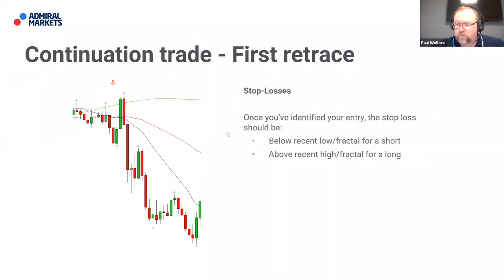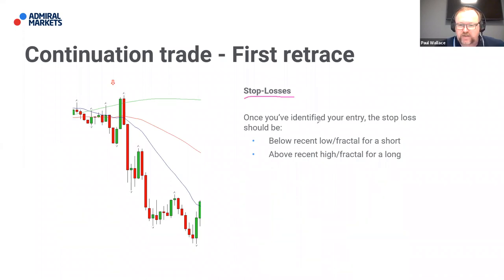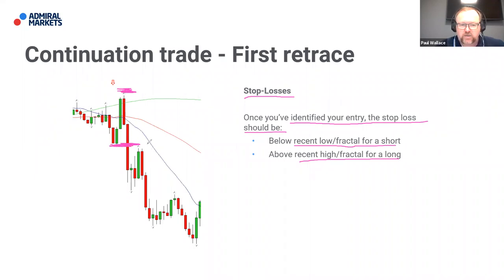Once we've identified our entry, it's important to know where our exit is should the trade not work out. As good traders we want to know where we're getting in, where we're getting out when we're wrong, and where we're getting out when we're right. Our stop loss should be above the most recent high for a short trade, or below the most recent low for a long trade. So once we have our entry identified, our stop loss would be placed above the most recent high.